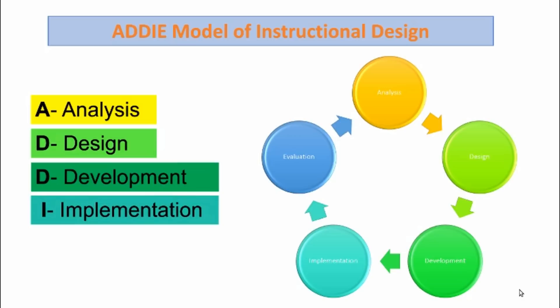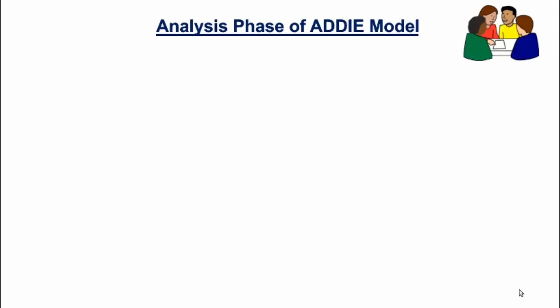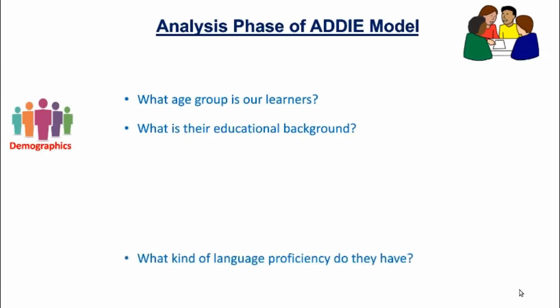Let us now look at each of these phases in details. The first phase of the ADDIE model is the analysis phase. As content developers, we first of all need to analyze our learners. For this we may need to do research for the demographics. That is, we need to ask questions like what age group is our learners, what is their educational background, what kind of language proficiency do the learners have, and how compatible are they with the use of technology.